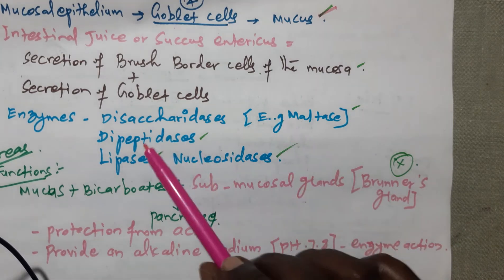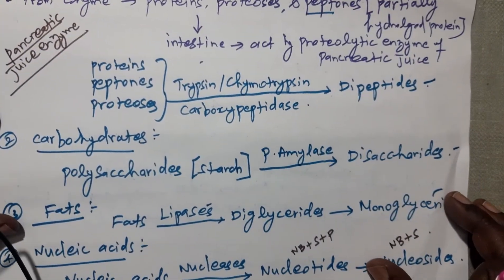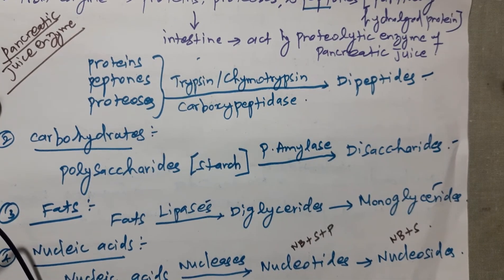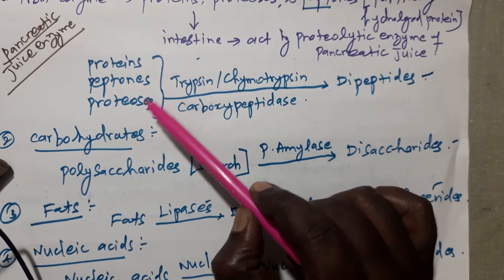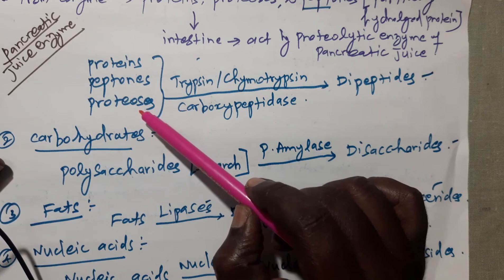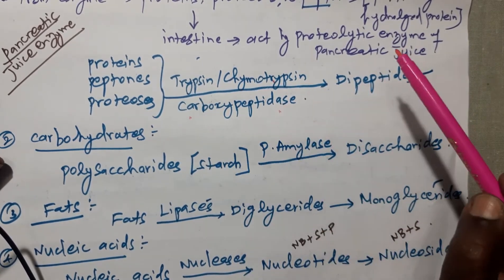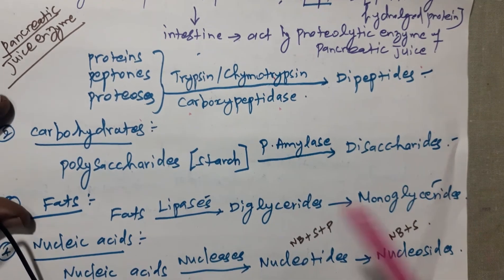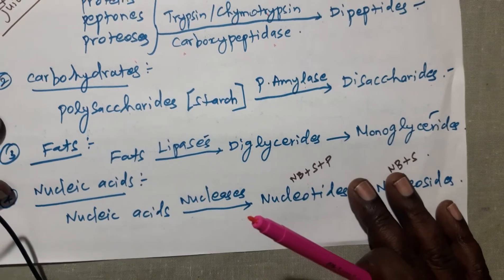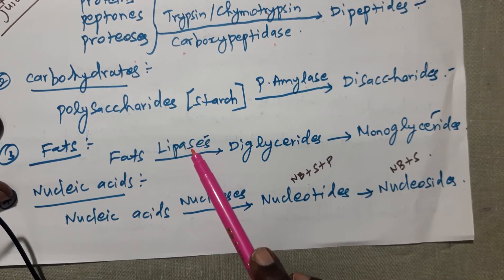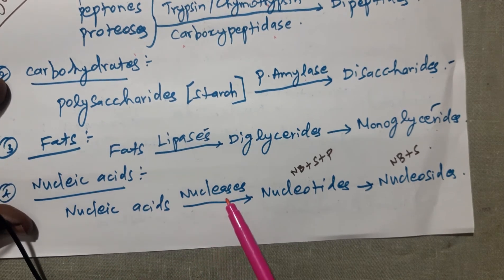Next, what enzymes are used for digestion activity? From the chyme, pancreatic juice enzymes act on proteins: proteolytic enzymes convert proteins, peptones, and proteoses — acted on by trypsin, chymotrypsin, or carboxypeptidases — into dipeptides. Second, carbohydrates: polysaccharide starch is acted on by pancreatic amylase and converted into disaccharides. Next, fat is acted on by lipases and converted into diglycerides, then into monoglycerides. Nucleic acids are activated by nucleases and converted into nucleotides.